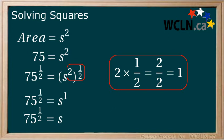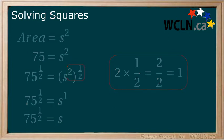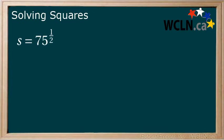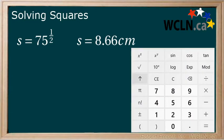But what if you want your answer without an exponent? You can now type 75 to the power of 1 over 2 into your calculator to get s equals 8.66 centimeters. Now make sure to give this a try. If you don't get 8.66 as an answer, try following these steps.